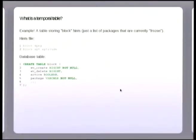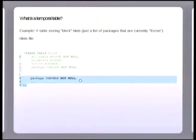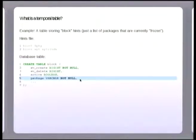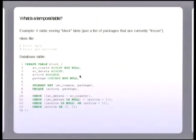Is that readable? Hey, it is. So a hints file might have a couple of packages frozen - package apt and aptitude in this case. And the corresponding table to store that would have originally just had a single column saying the package to be blocked. To make it a temporal table we add some timestamps, which are these two, and the active record.